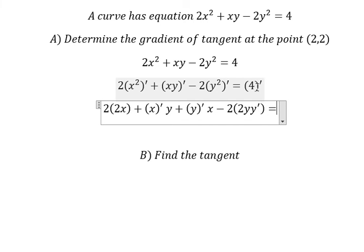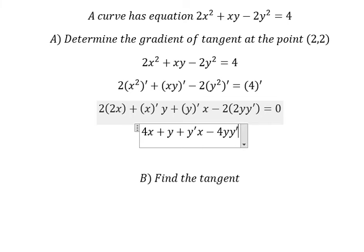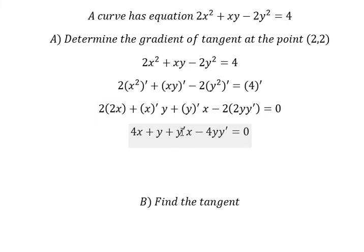The derivative of 4 is zero. So we have 4x plus y plus the derivative of y times x, minus 4y times the derivative of y equals zero. The derivative of y terms can be factored.